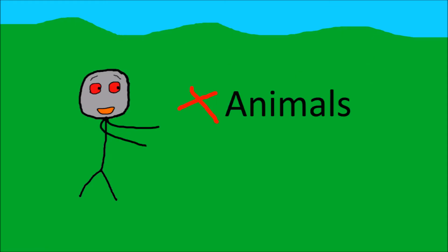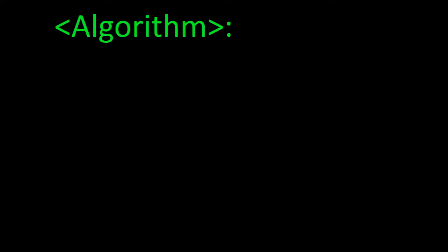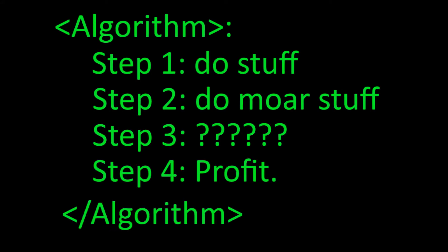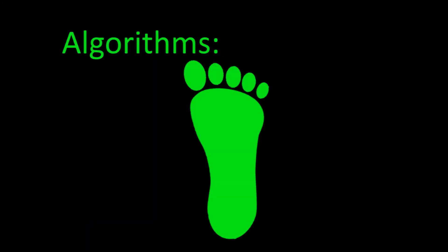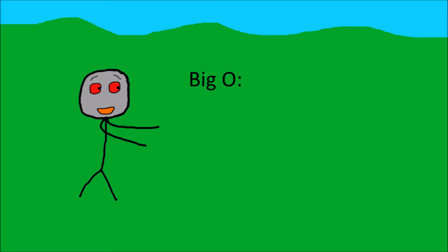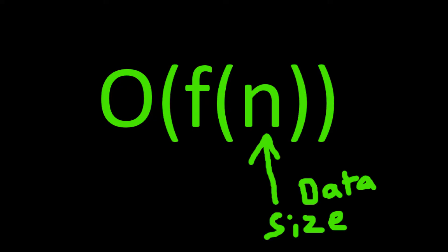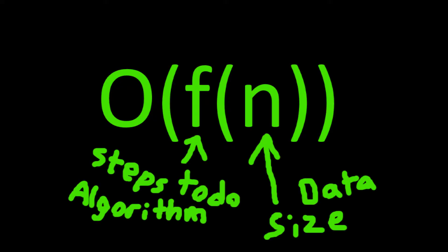Here we don't call animals animals, we call them algorithms. An algorithm, simply put, is a bunch of steps you take to solve a problem. Now all algorithms have a footprint — you may remember this from introductory computer science. Its name is Big O. Big O tells us how an algorithm scales as our input increases in a worst-case situation, and it comes in this form. N is the size of the input, and the function of N tells us how the steps of our algorithm increase as N gets bigger.